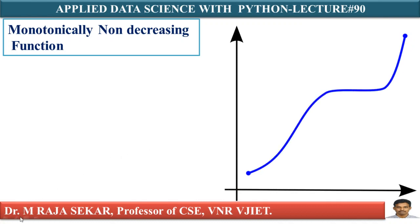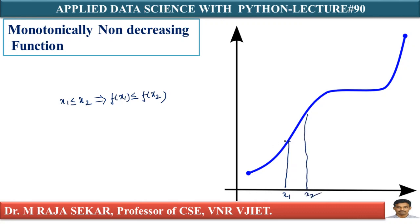Just observe this graph. This graph is monotonically non-decreasing. What is a monotonically non-decreasing function? x1 less than or equal to x2 implies f(x1) is less than or equal to f(x2). Then I can say this function is monotonically non-decreasing. This is my x1 and this is my x2. This height is f(x1) and this height is f(x2). x1 ≤ x2, yes, f(x1) ≤ f(x2). This is a monotonically non-decreasing function.